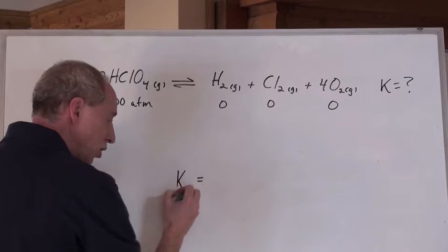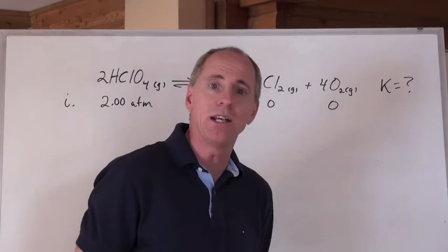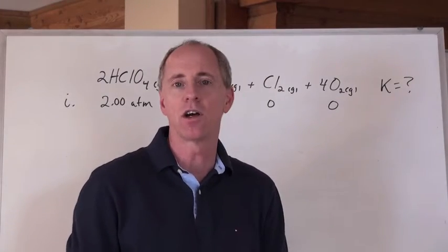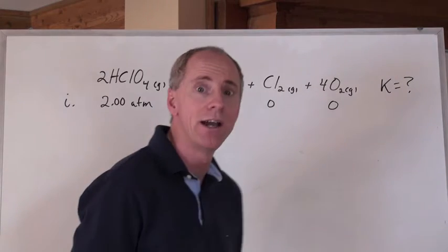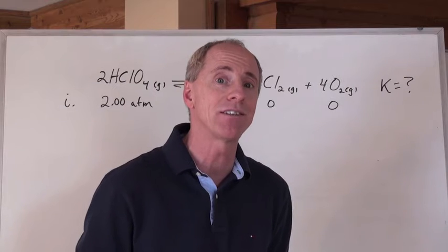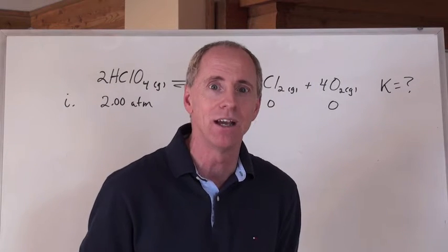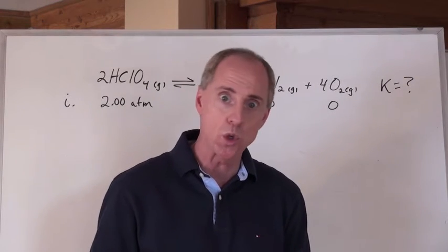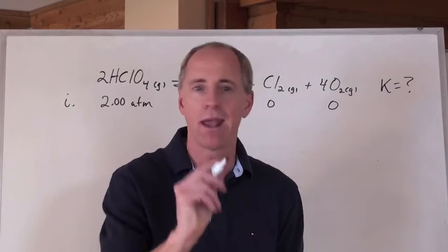By the way, if it was concentration, you could put a C there. I've just been writing K equals, but it could be KC for concentration, KP for pressure, and later, KW for water's equilibrium constant, KA and KB for acids and bases, KSP for solubility products. Lots of K values, just write K. It's fine.